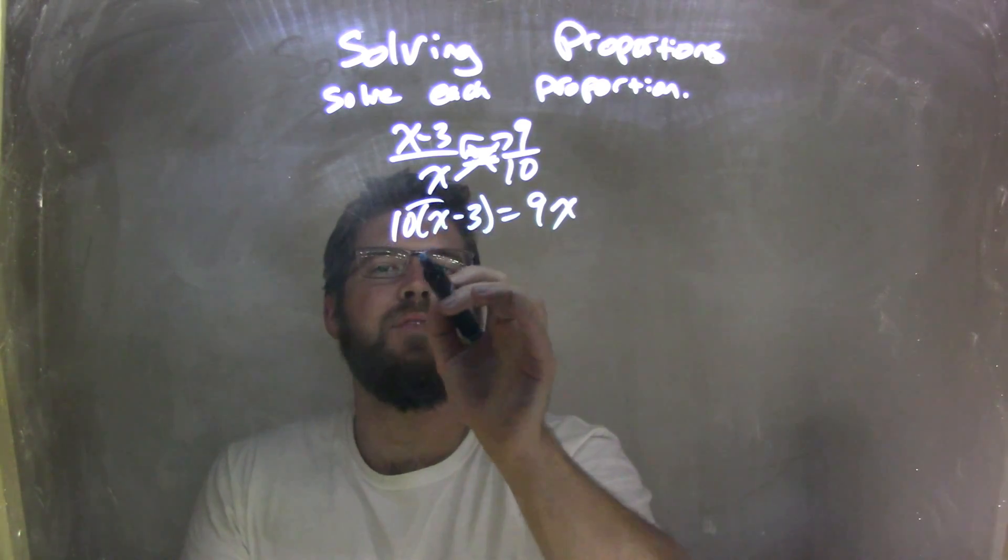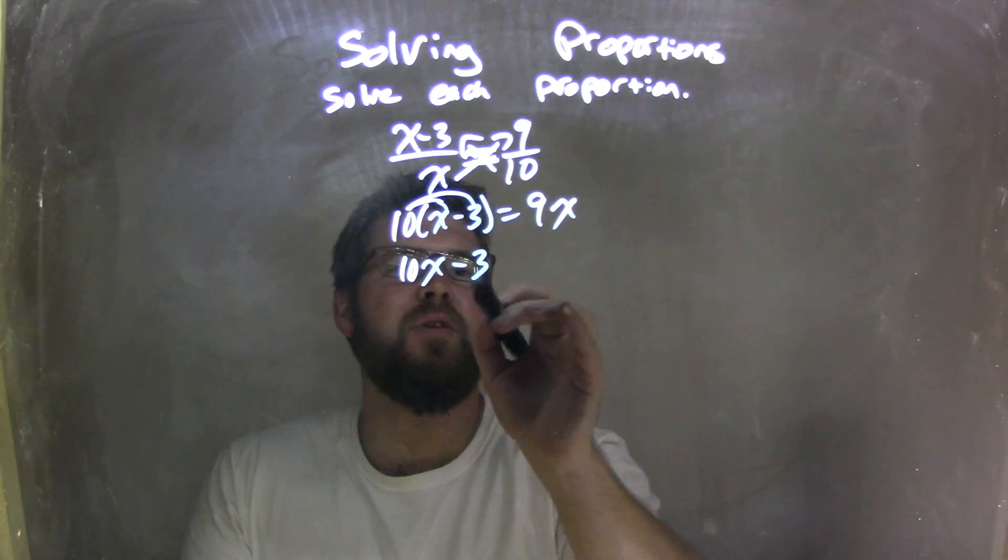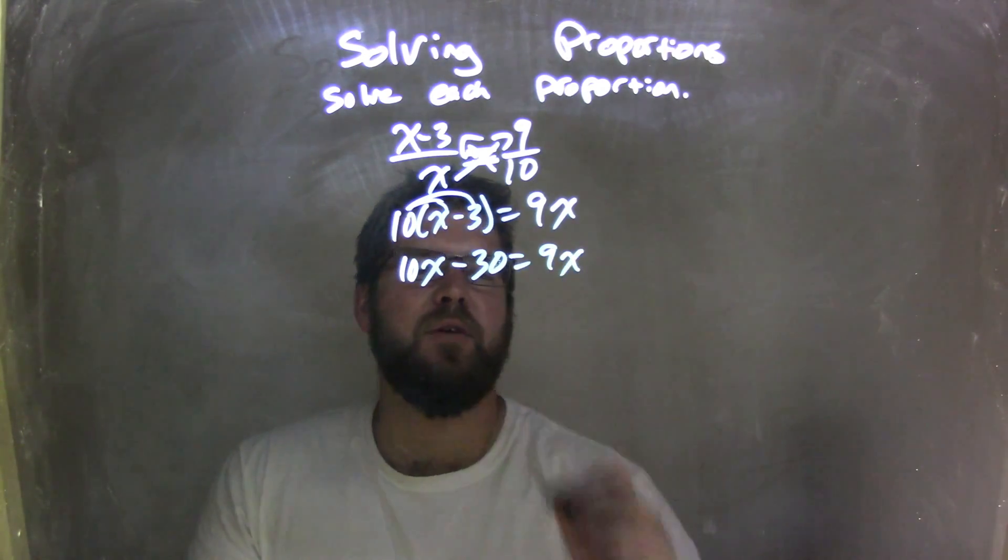Distribute that 10 across. 10 times x is 10x, and 10 times 3 is 30 equals 9x.